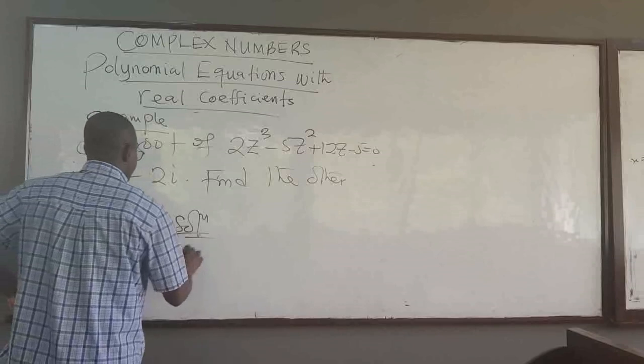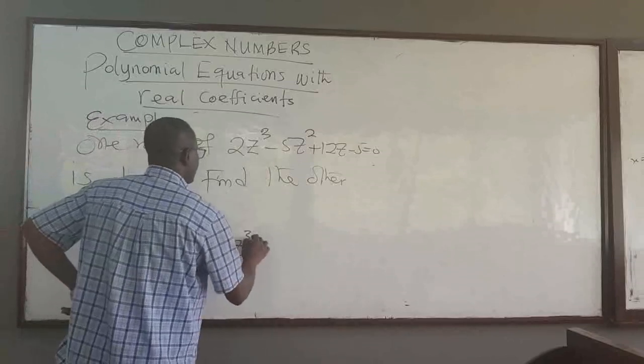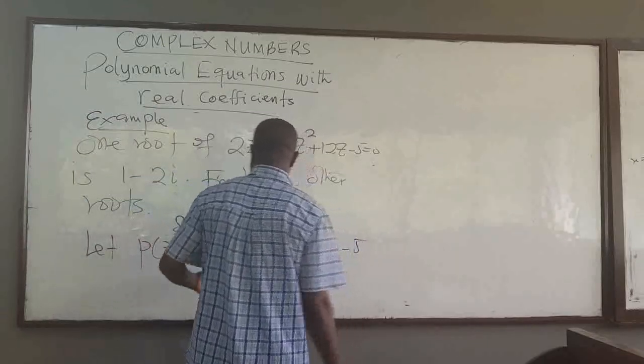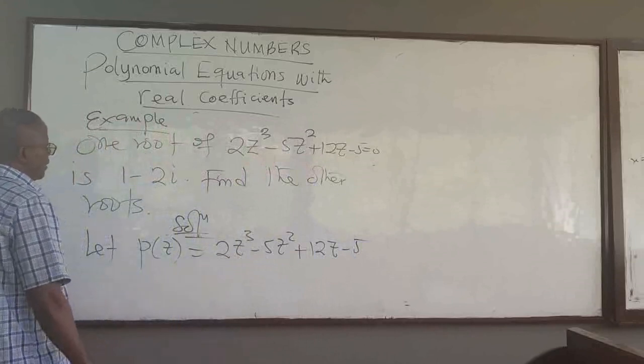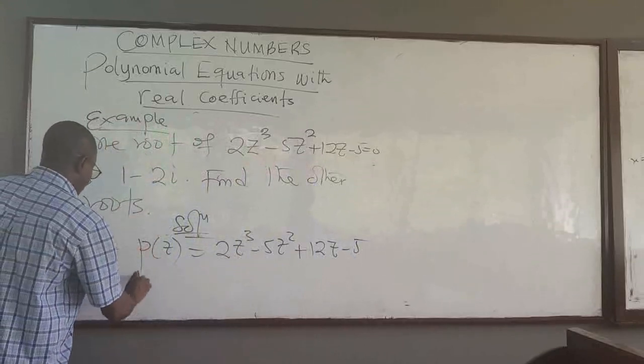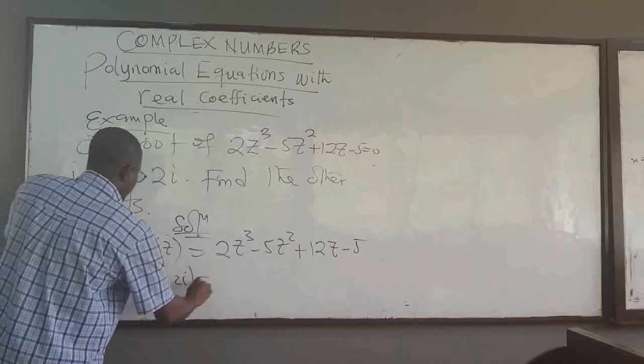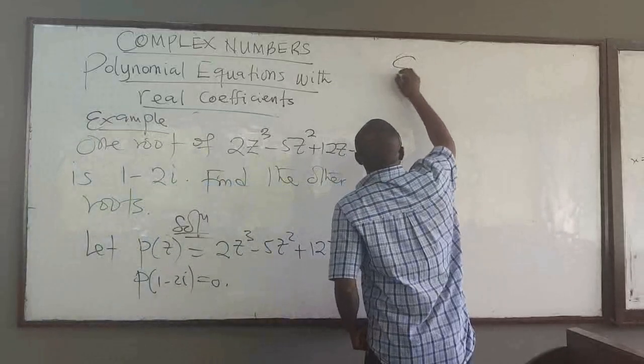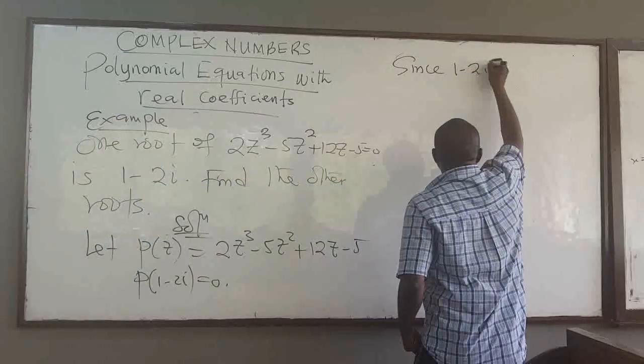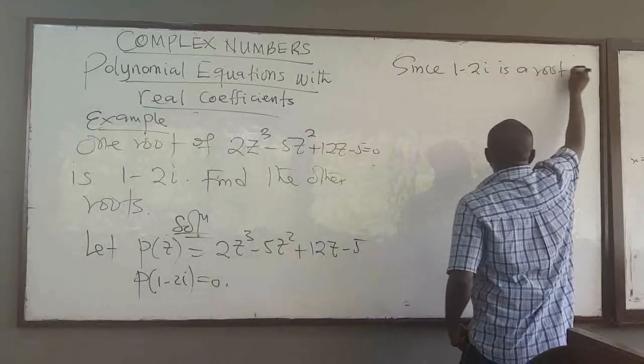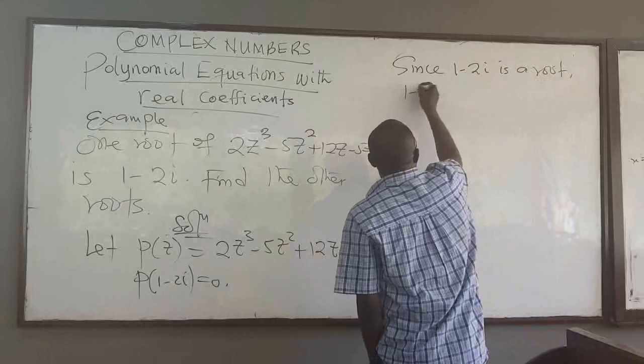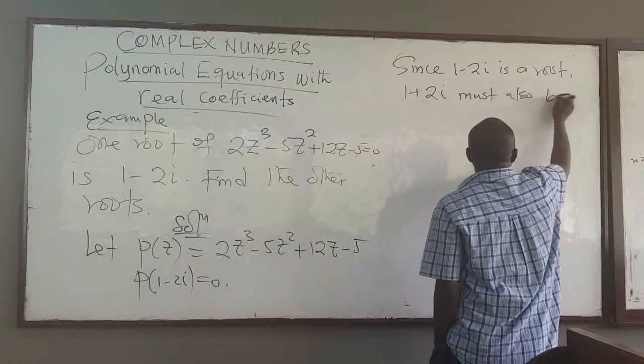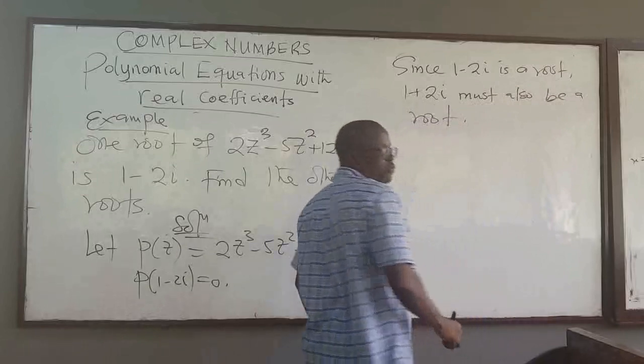Let the polynomial p of z be equal to 2z to the power 3, 5z squared, 4z, minus 5. So if this is a root, it means that p of 1 minus 2i has to go to 0. That's what we mean by this is a root. Now if this is a root, then since 1 minus 2i is a root, 1 plus 2i must also be a root.